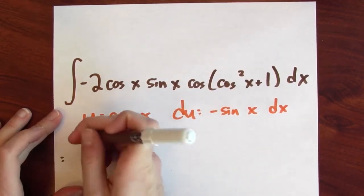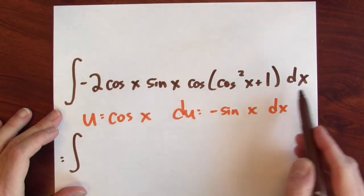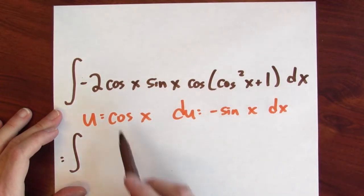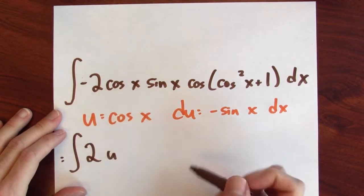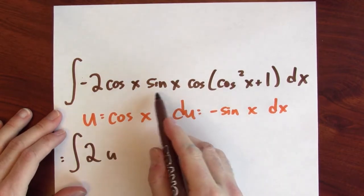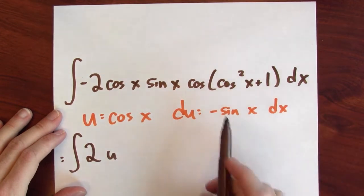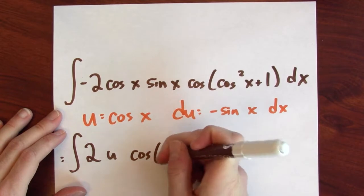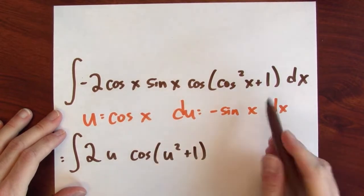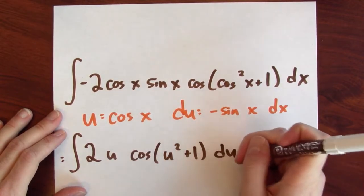Let's make the substitution. This anti-derivative problem is now, well, the minus sine x dx will become the du, but I'm left with a 2. Cosine x is u. The minus 2 and the sine x and the dx are going to be in the du, but I've got a cosine. Cosine squared x is u squared plus 1, and then everything that's left over is in this du.